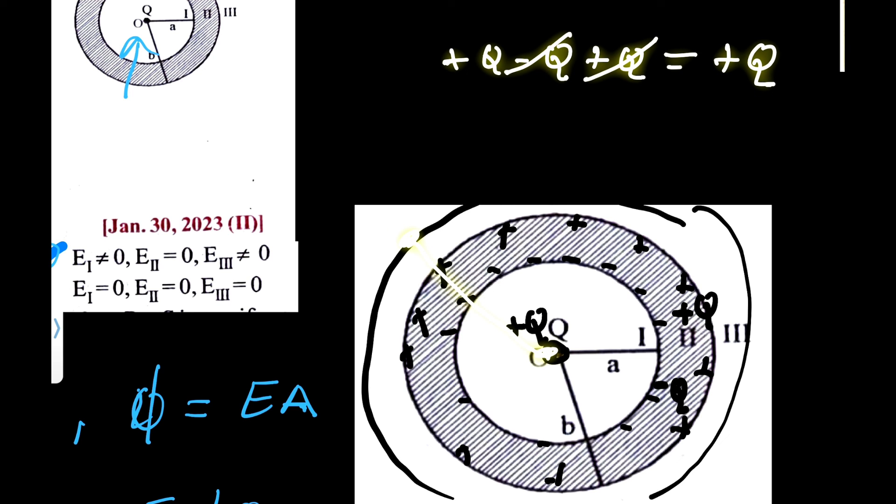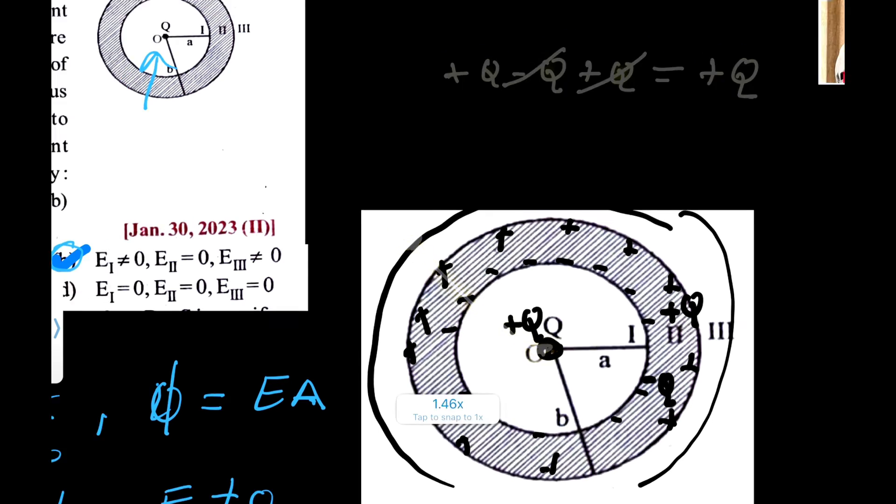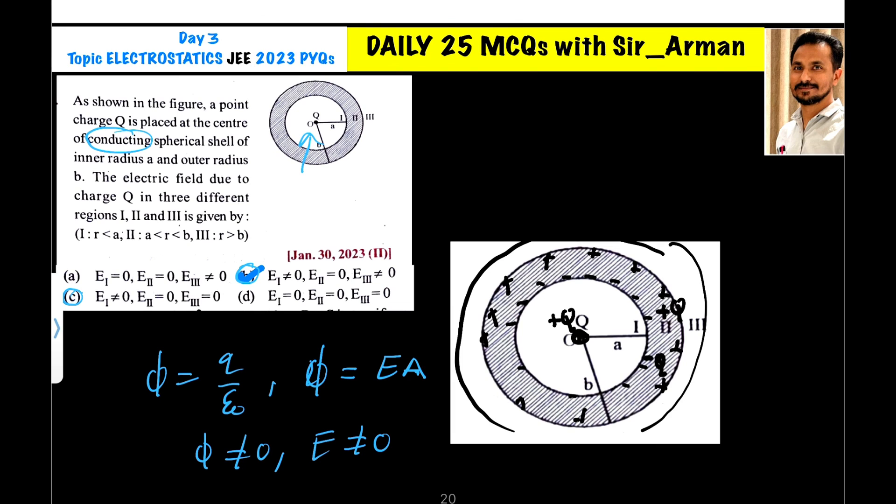Since some charge is present which produces an electric field in the outer region, the electric field there is not zero. Hence the correct option is B.